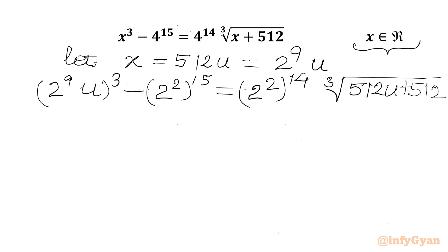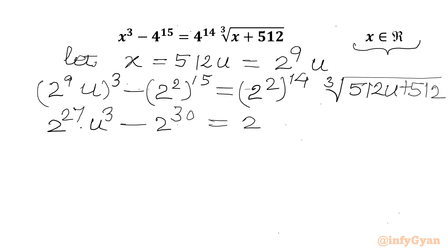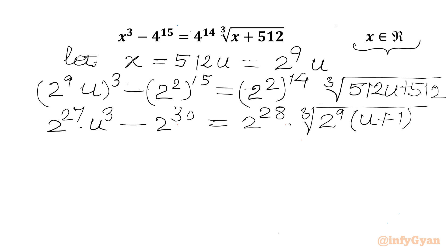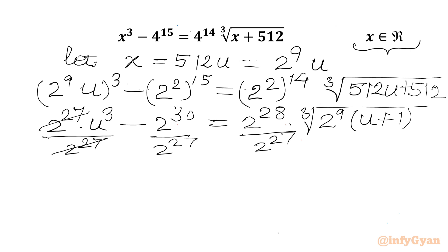Using exponent properties we can write 2 power 9 times 3, which will be equal to 27. So 2 power 27 times u cube minus 2 power 2 times 15, so 2 power 30, equal to 2 power 2 times 14, so 2 power 28 times cube root of 512, which is 2 power 9, and that is common. In the bracket we write u plus 1. Now we can divide both sides by 2 power 27.